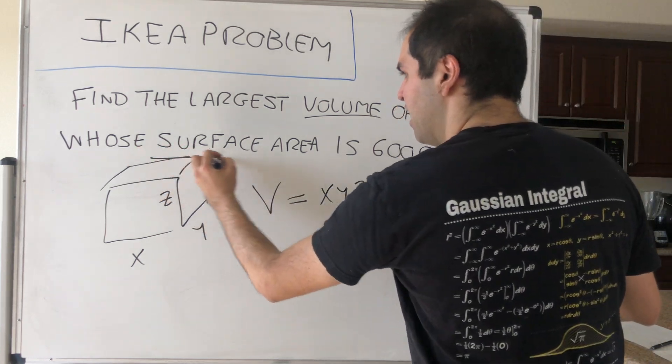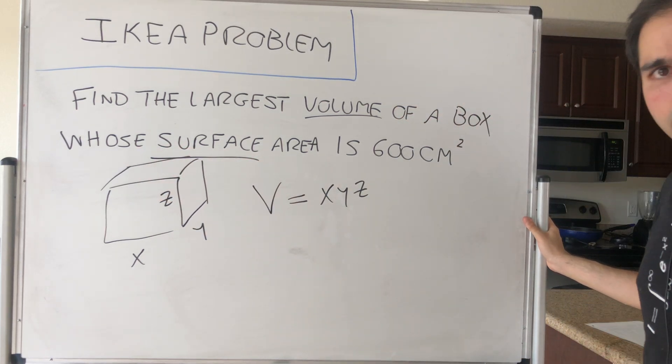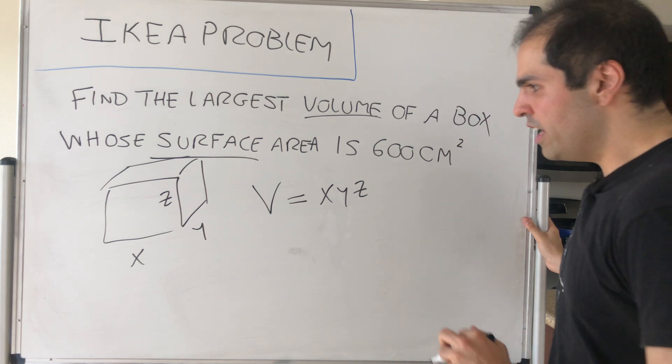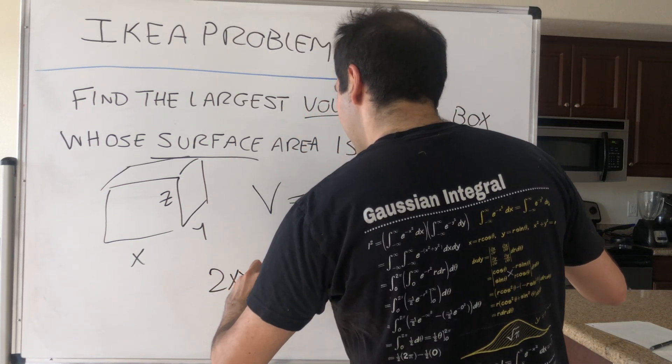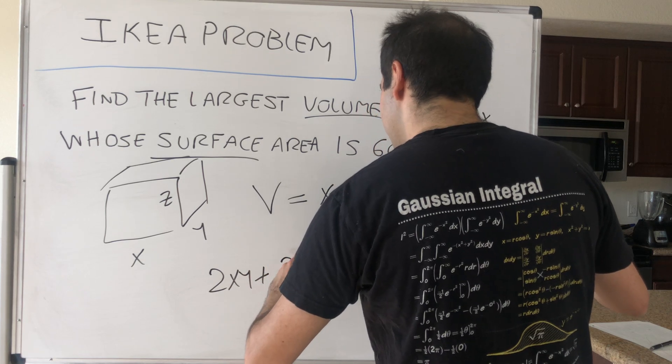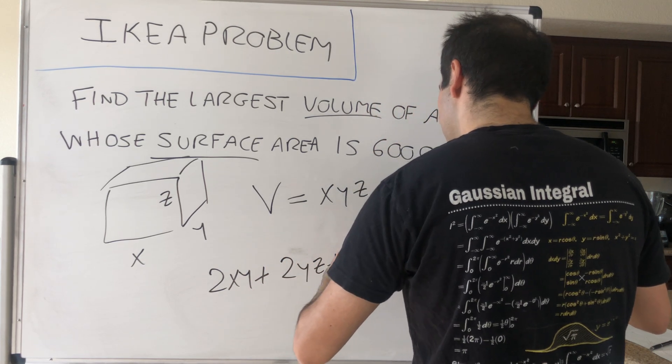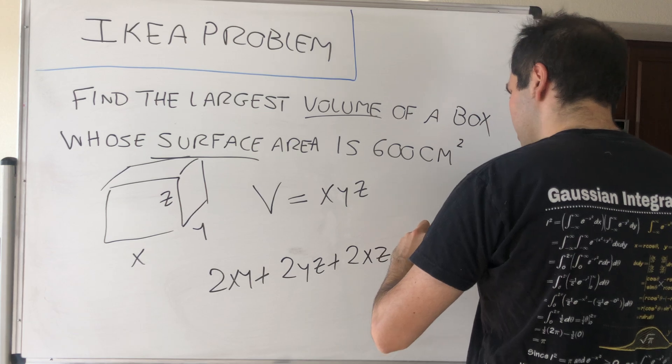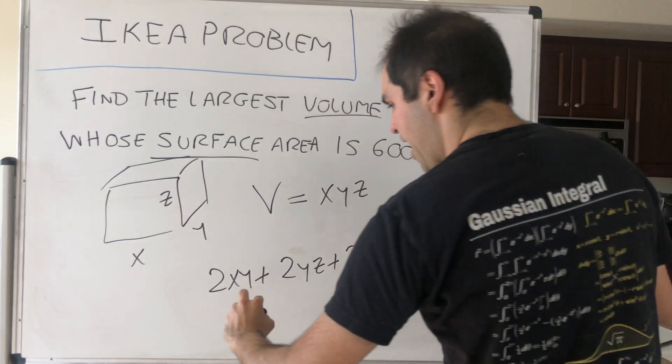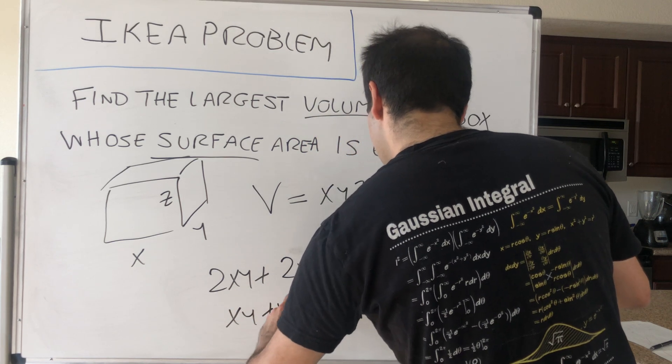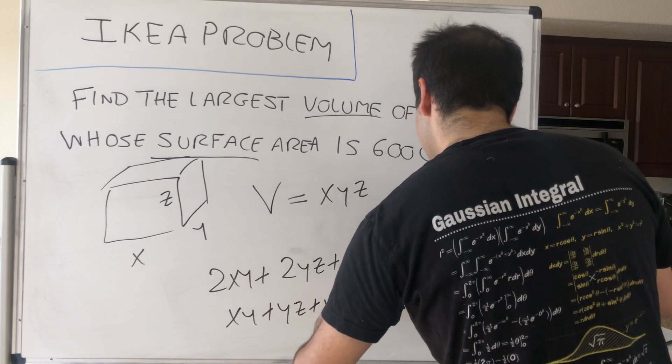We also know the surface area is 600 square centimeters. So our constraint becomes the surface area, which is 2xy plus 2yz plus 2xz equals 600, which of course you can write as xy plus yz plus xz minus 300 equals 0.